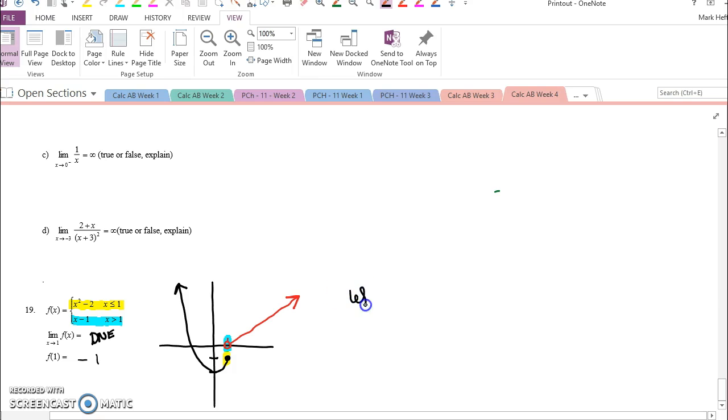All we need to do is look at the left behavior. The left is defined by x squared minus 2. That's really equal to f of x. So we plug in our 1 and we get 1 squared minus 2 equals negative 1.